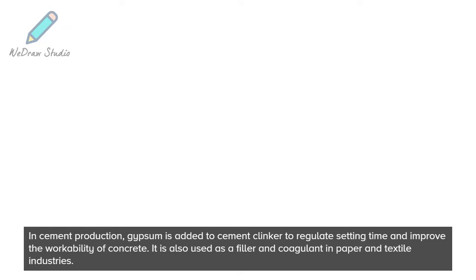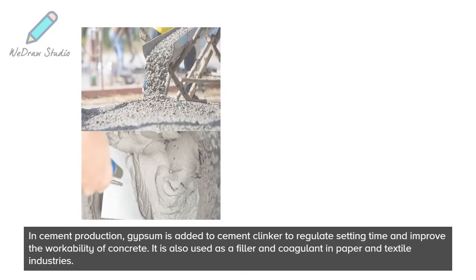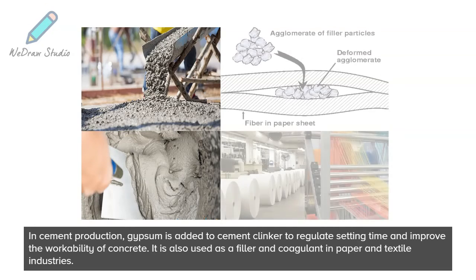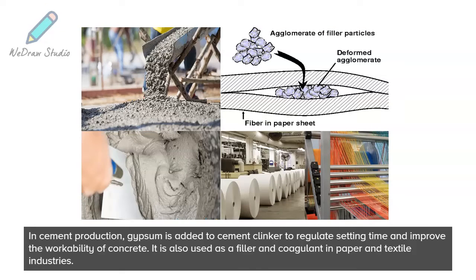In cement production, gypsum is added to cement clinker to regulate setting time and improve the workability of concrete. It is also used as a filler and coagulant in the paper and textile industries.